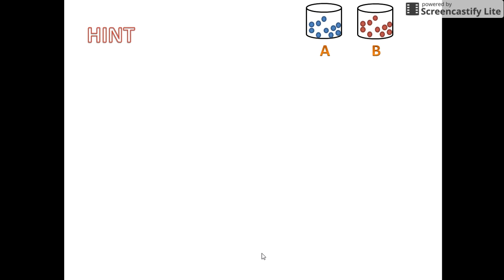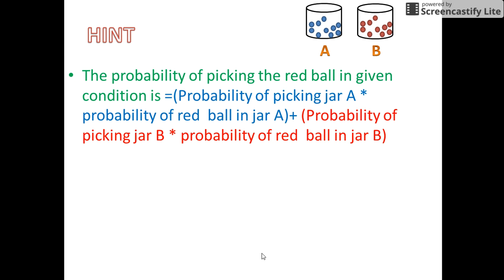Let me give you a small hint. To decide the probability we first need to select the jar and then we need to select the balls from the jar. So the probability of picking the red ball in any given condition is: probability of picking jar A multiplied by the probability of red balls in jar A, plus the probability of selecting jar B multiplied by the probability of red balls in jar B.